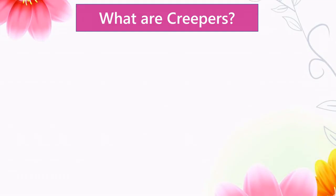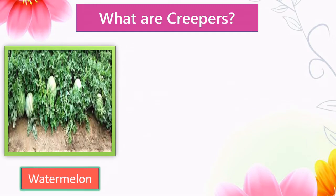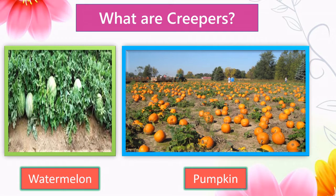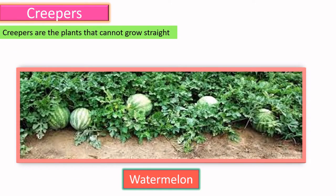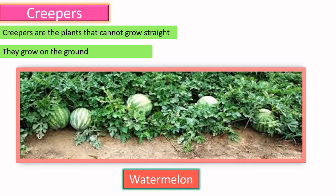What are creepers? Let us see some examples: watermelon and pumpkin. Creepers are plants that cannot grow straight — they grow along the ground.